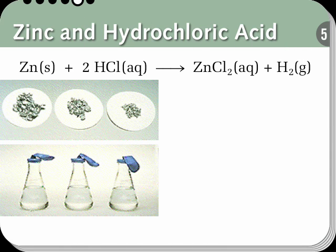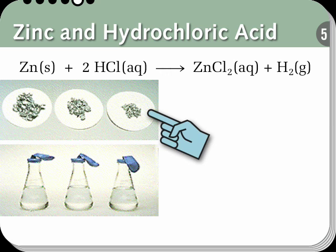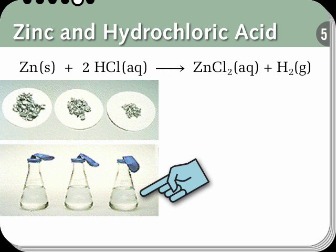Here we're going to look at the reaction of metallic zinc and hydrochloric acid. The reaction will produce zinc chloride, which dissolves in water, and hydrogen gas. We'll observe the hydrogen gas coming out of the reaction because we're going to attach a balloon to the flask, and the hydrogen gas will expand the balloon. We're going to vary the amount of zinc metal, but keep the amount of hydrochloric acid constant in the three reactions.